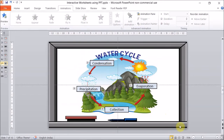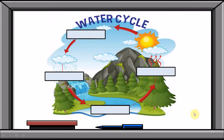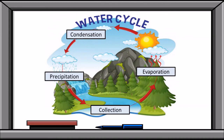Now we have the entire water cycle process set up. In the slideshow, labels appear one by one. You ask the student what the first process is — due to sunlight it's evaporation, then condensation, then precipitation, then collection. This can be used while teaching, with labels appearing as you explain, or as a formative assessment where students fill in blank labels.